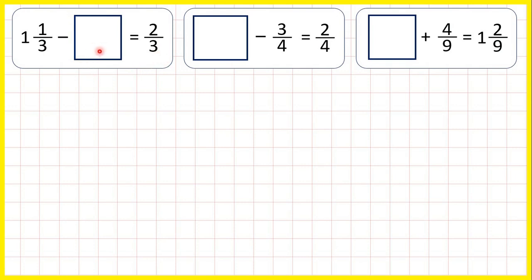So when the number that we're subtracting is missing, we can find the missing number by subtracting. We can work out one and one third minus two thirds and that will give us our missing number.